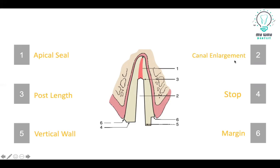Then we will do the canal enlargement to make the space for the post. The third point is the post length, which is done at two thirds of the root length, or as long as the clinical crown. We need to mention that we don't need too long posts that interrupt with the apical seal, and we don't need too short posts that could lead to fracture because the resistance will be less with the load on the post.